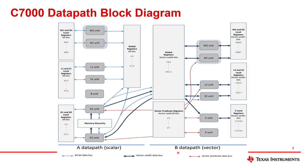The B side, by contrast, is what we call vector width. Vector width is wider than 64 bits — we'll get to what a vector is in a few slides, but that all happens on the B side.